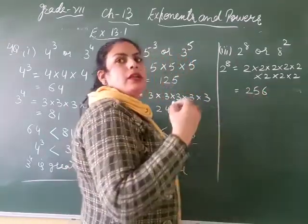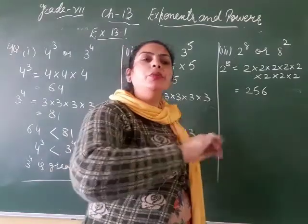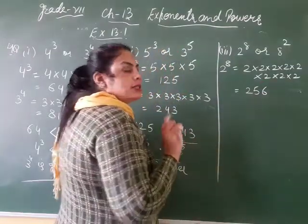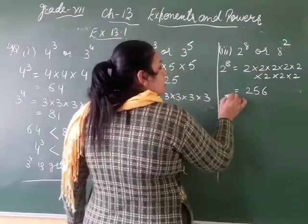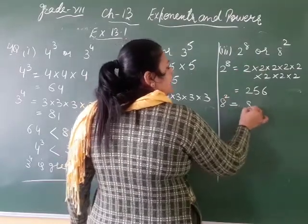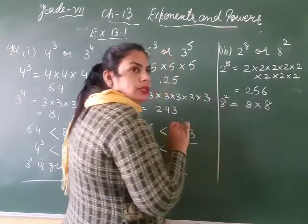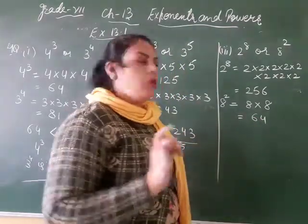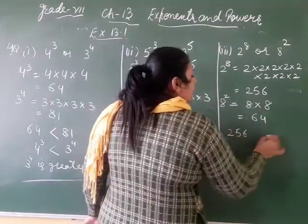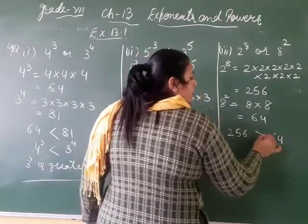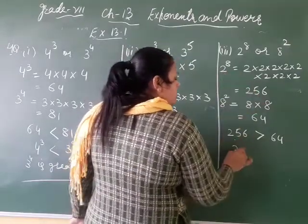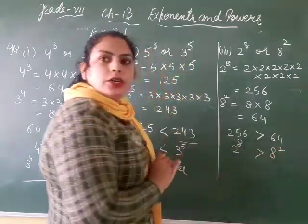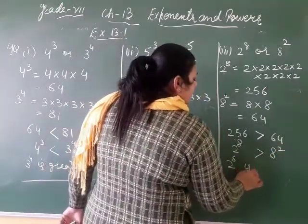Clear? So 2 raised to power 8 gives 256. Now the other number is 8 raised to power 2, which means 8 multiplied 2 times: 8 eights are 64. So which is greater — 256 or 64? 256. So 2 raised to power 8 is greater.